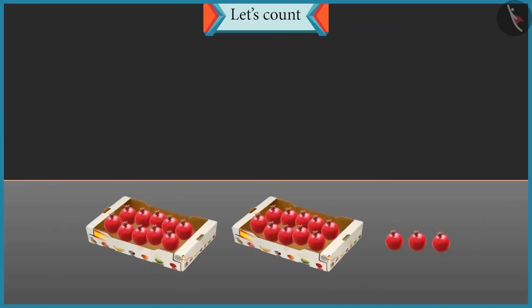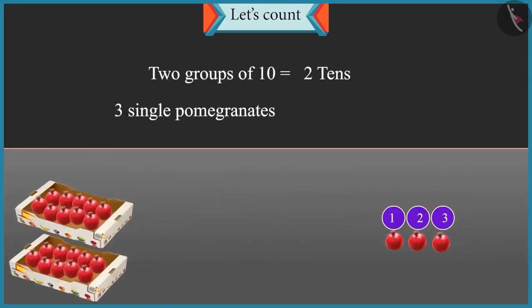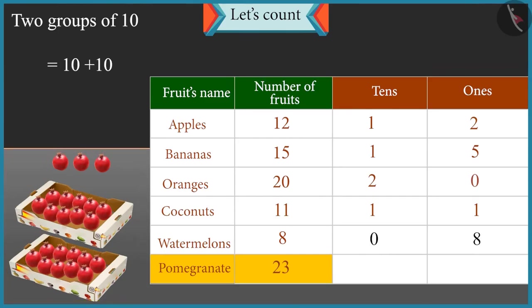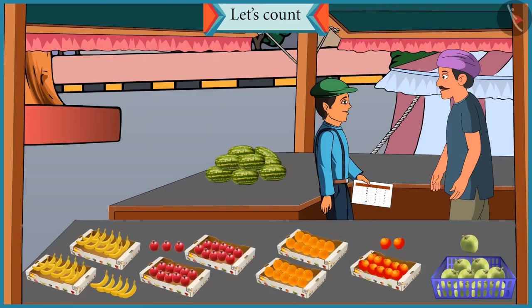Chotu, I have counted the pomegranates and placed them in the groups of tens. Can you tell me how many pomegranates are there? Uncle, there are 2 groups of tens. That means 2 tens and 3 single pomegranates. That means 3 ones. Uncle, there are 23 pomegranates. 2 groups of tens. So it will be 10 and 10, 20. And there are 3 more pomegranates. So it will be 21, 22 and 23. There are 23 pomegranates. Absolutely right.